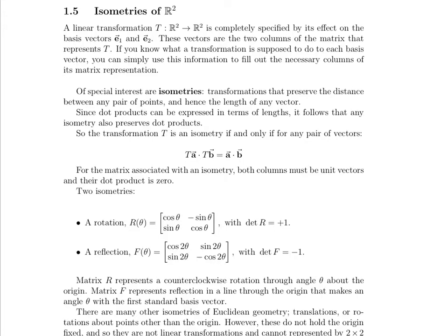The columns of T, the matrix, are what happens to the basis vectors. You have experience with that from the first problem set. All we have to do with these isometries is figure out what happens to the basis vectors, and we're able to write down the matrix representation T for these isometries.